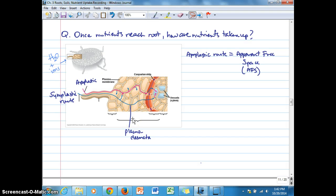Water with dissolved nutrients or ions can travel through that apparent free space, basically along the same path that we talked about as the apoplastic route.